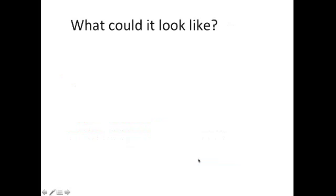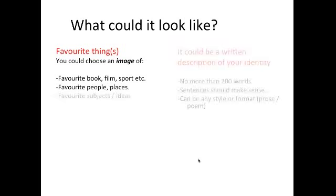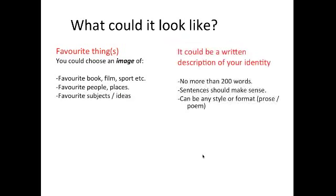So what could it look like? Well, you could have some images of your favourite things — for example a favourite book, film, sport, etc. You can have some images of favourite people and places, and that could be family members or famous people that you admire. Or you could think about some favourite subjects or ideas that you enjoy — so if you particularly like astrophysics, you might have some images to do with that.